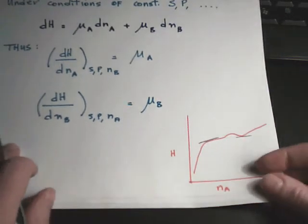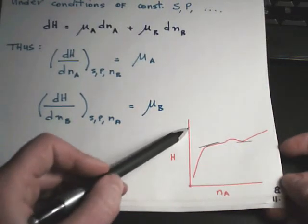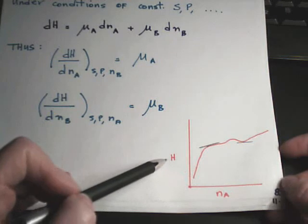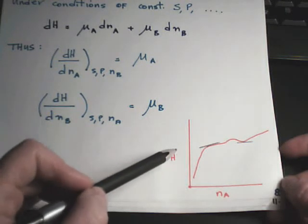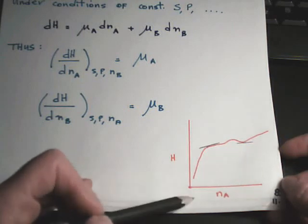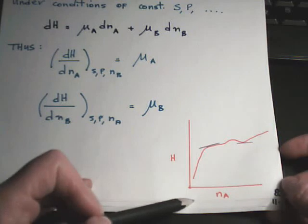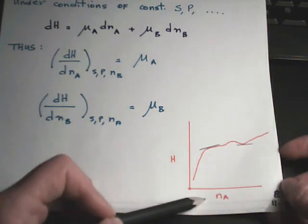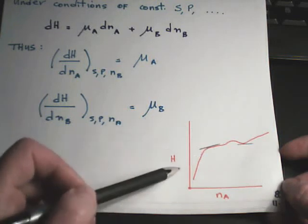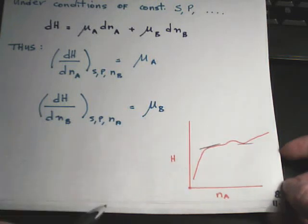Earlier we had a diagram of G versus NA for constant temperature and pressure, and similarly we could draw one of U versus NA for constant entropy and volume. This one — H versus NA — is valid insofar as the slope equals the chemical potential when entropy and pressure are constant.